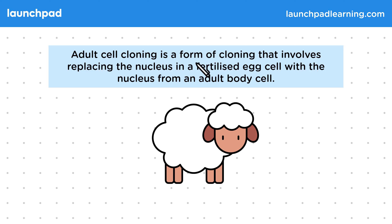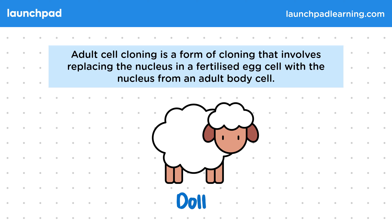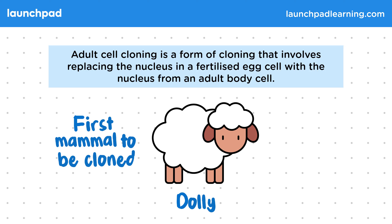Adult cell cloning is a form of cloning that involves replacing the nucleus in a fertilized egg cell with the nucleus from an adult body cell. The most famous animal cloned by this method was Dolly the sheep, the first mammal to ever be successfully cloned, born in 1996.